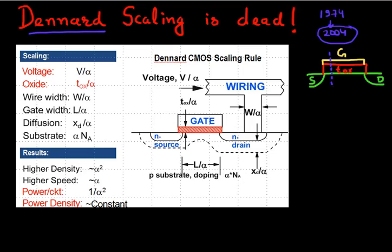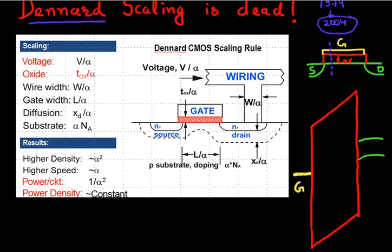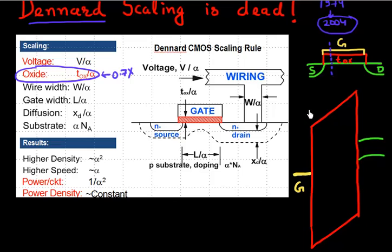Drawn over here is the band diagram of this transistor along this vertical direction. What Mr. Dennard required was to scale the oxide thickness with every generation by 0.7x. So if this oxide is 10 nanometers, the next generation it should be 0.7x of that, that is 7 nanometers. Then the next generation it should be even 0.7x of that.